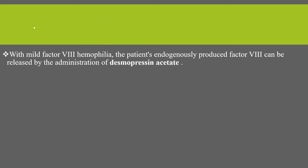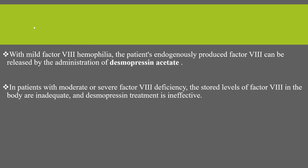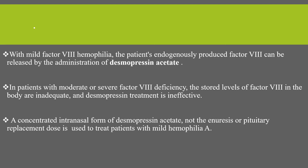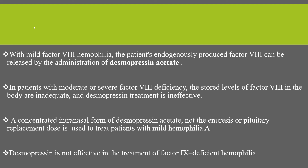With mild factor 8 hemophilia, the patient's endogenously produced factor 8 can be released by administration of desmopressin acetate. In patients with moderate to severe factor 8 deficiency, stored levels of factor 8 are inadequate and desmopressin treatment is ineffective. The concentrated intranasal form of desmopressin acetate — not the enuresis or nocturnal replacement dose — is used to treat patients with mild hemophilia. Desmopressin is not effective in the treatment of hemophilia B, or factor 9 deficient hemophilia.